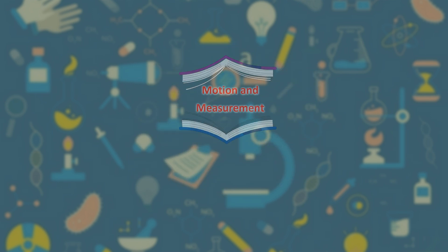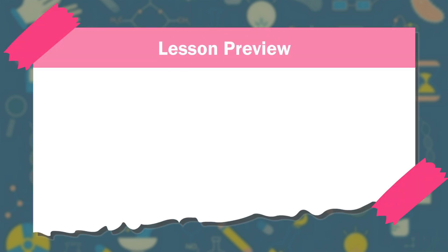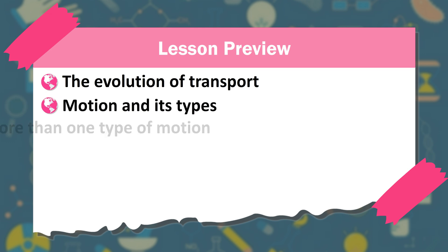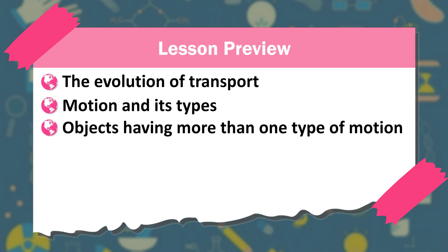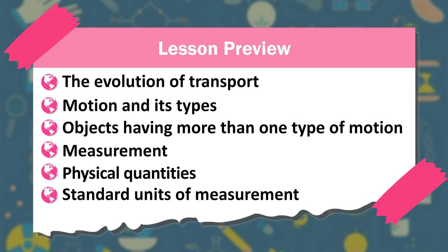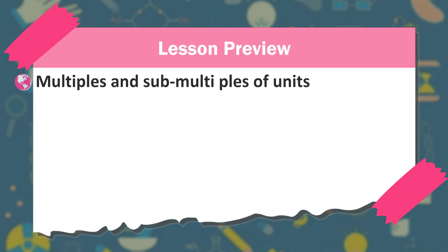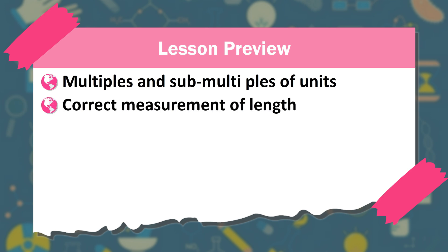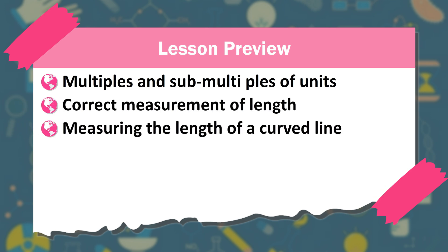Motion and measurement. Lesson preview. The evolution of transport. Motion and its types. Objects having more than one type of motion. Measurement. Physical quantities. Standard units of measurement. Multiples and sub-multiples of units. Correct measurement of length. Measuring the length of a curved line.